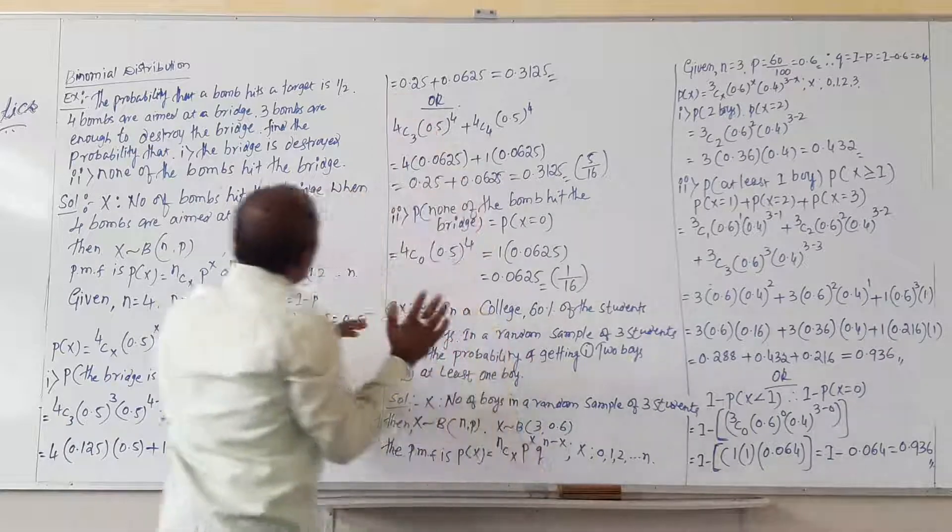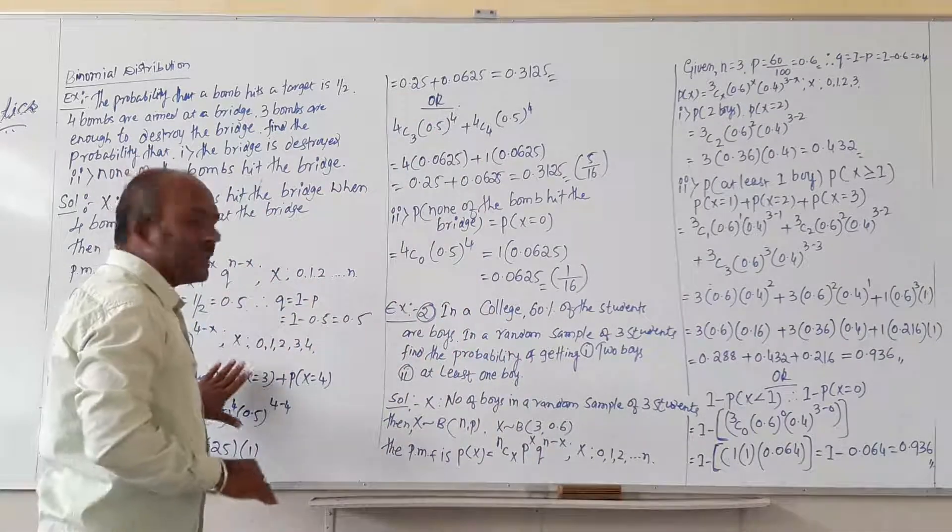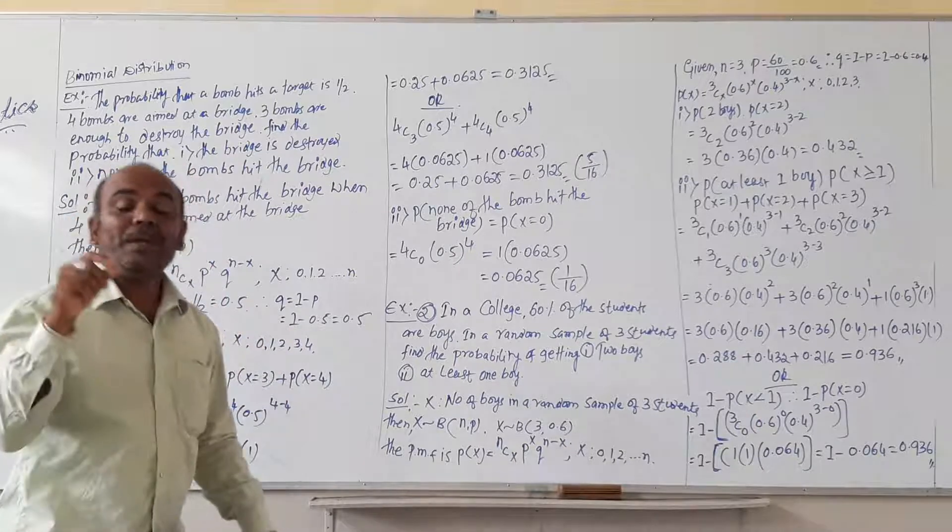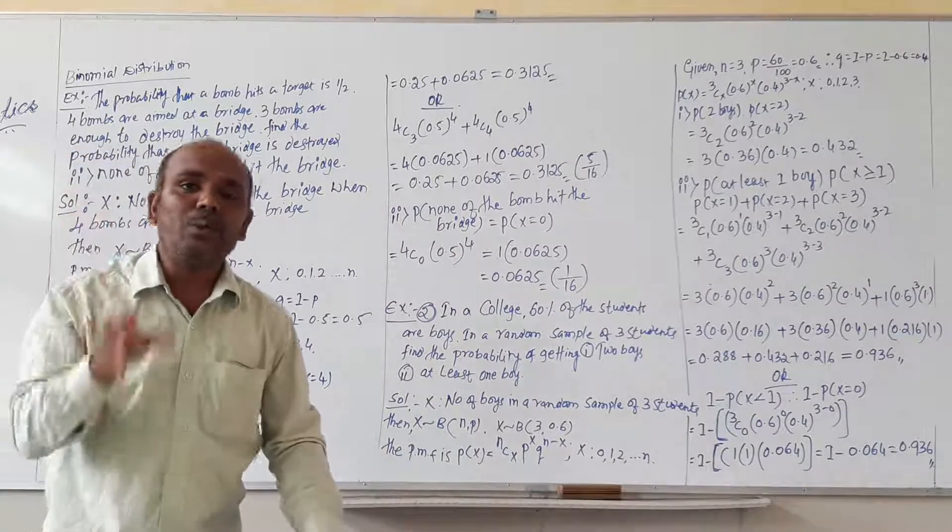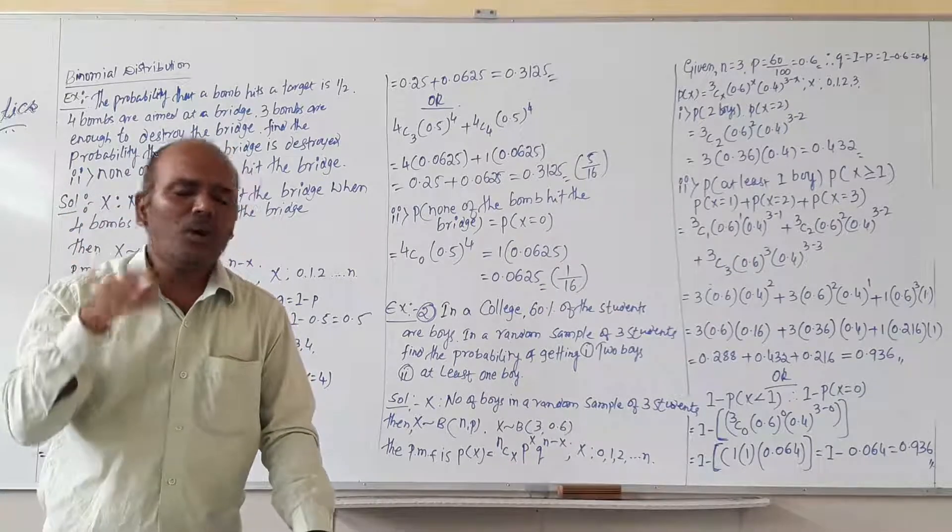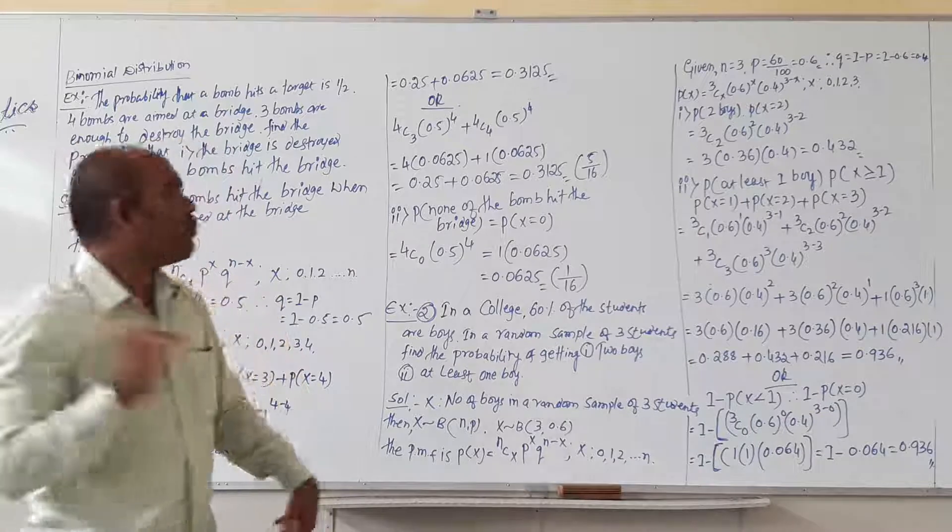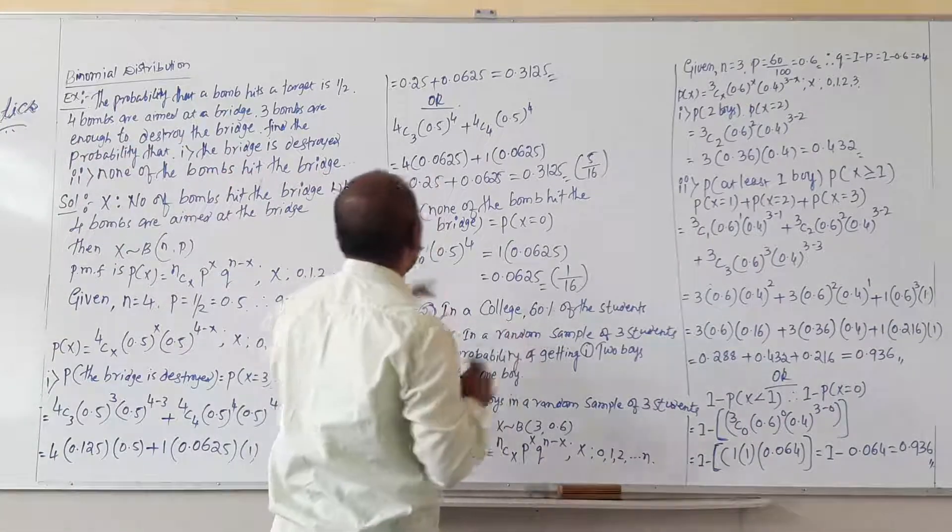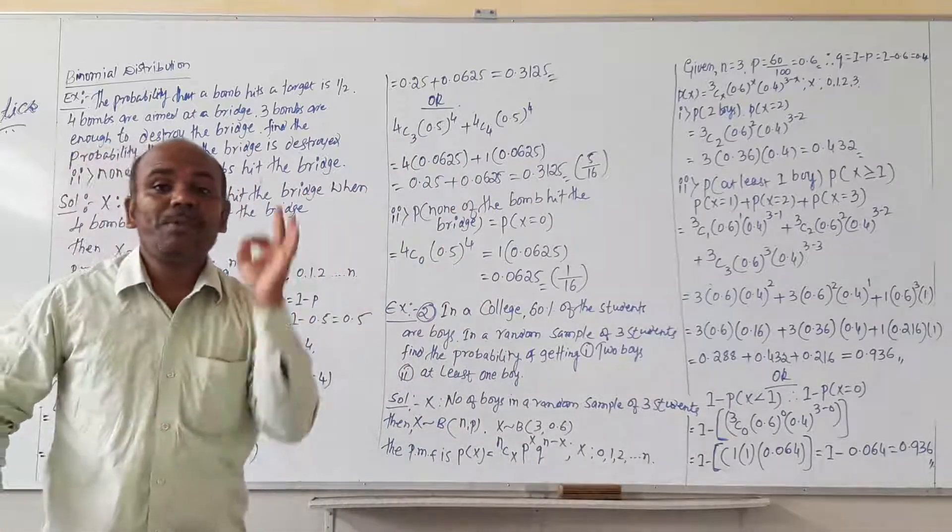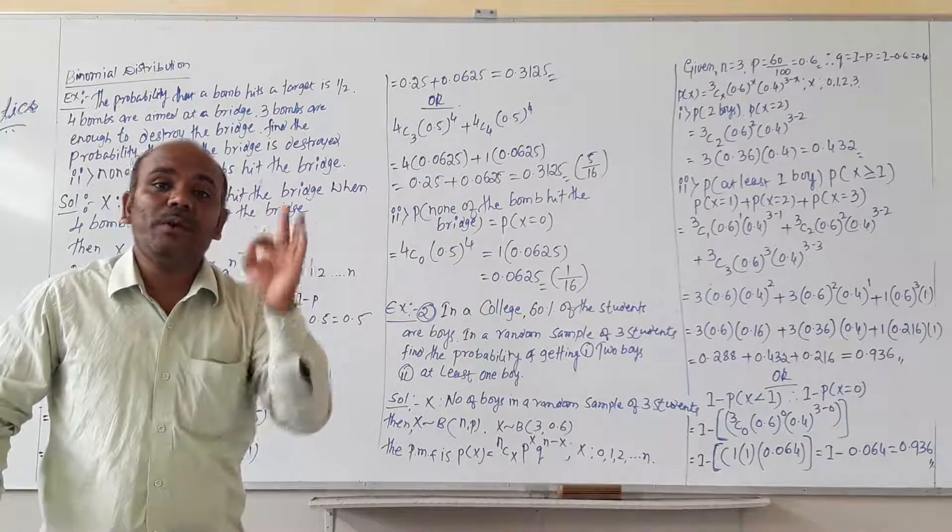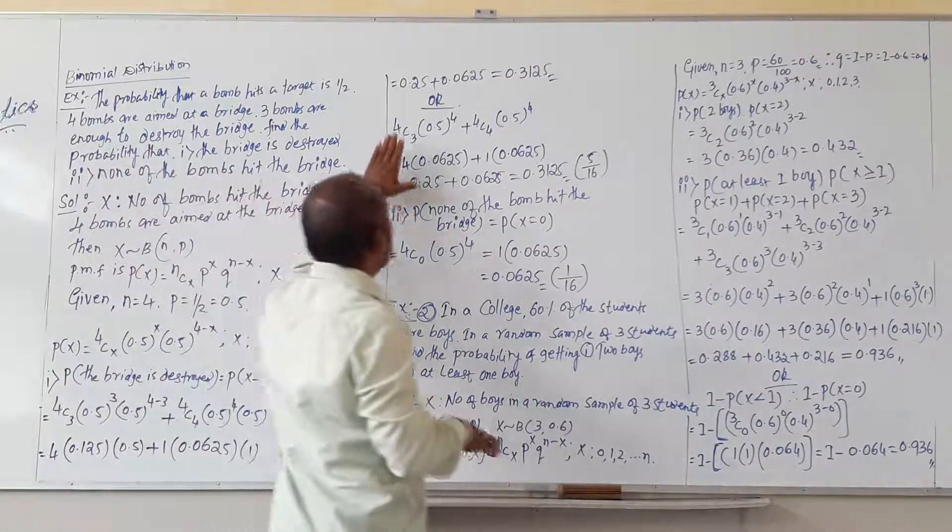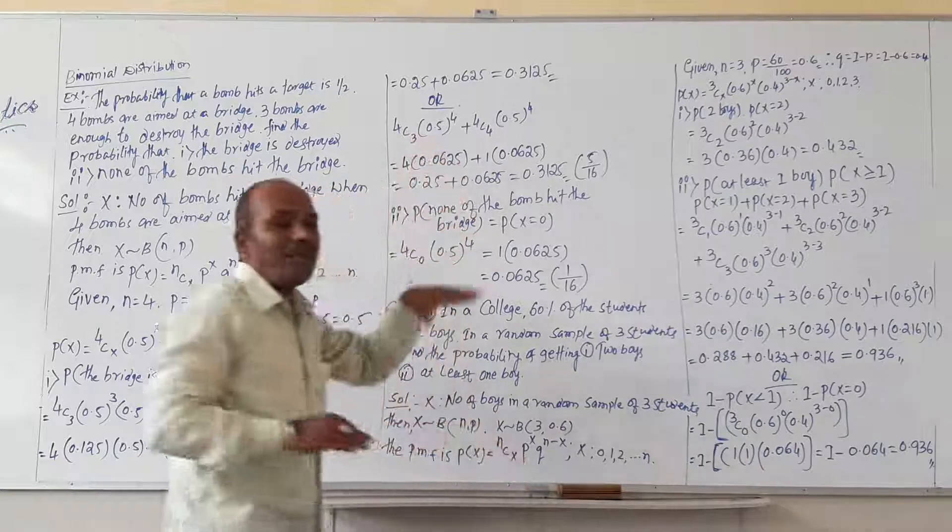This is one way of calculating this question, and another thing is also there. When p value is 1 by 2, or when p value is 0.5, and also q value is 0.5, or 1 by 2, on that moment it is so simple. This concept is applicable only when p value is 0.5 and also q value is 0.5. Then only this concept will be applicable. In other cases, this concept will not be applicable.